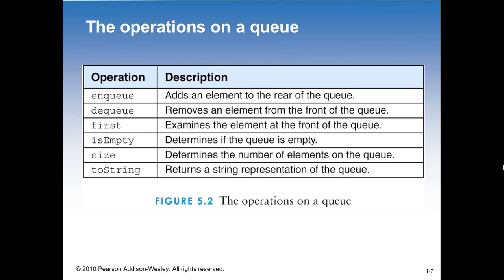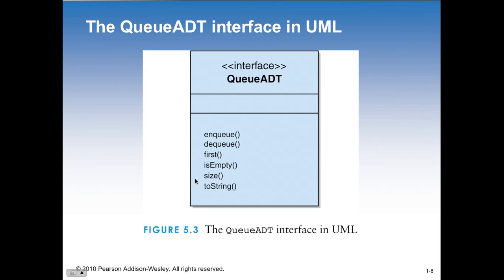Typical operations of a queue - these are probably going to include an enqueue and a dequeue. You want to know who the first one is. We want to know if it's empty and the size of the queue - how many people are waiting. And then the toString to represent the queue if we're going to print it out to the screen. Here's a UML kind of abstract data type queue implementation or interface. I call it an interface because it's nothing more than outlining the methods that might be implemented in a class that we're going to create.